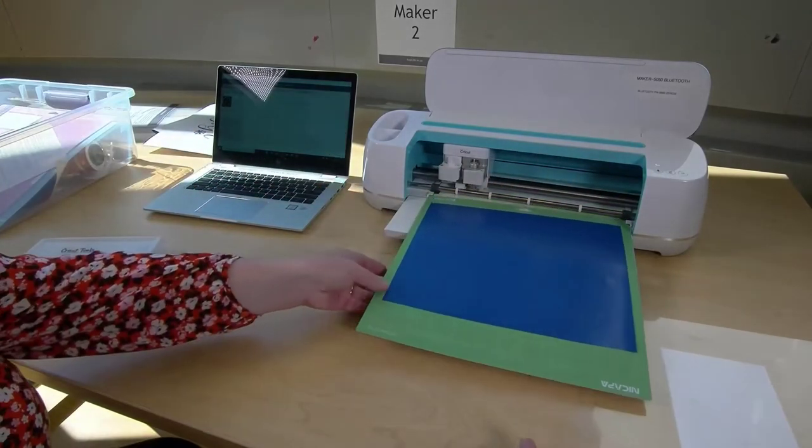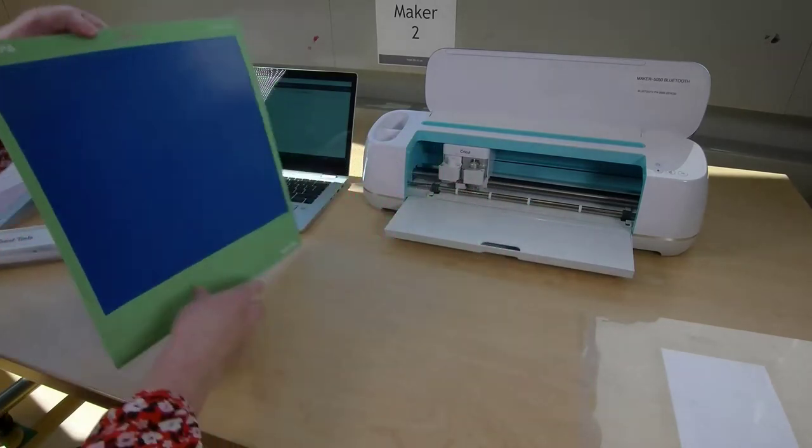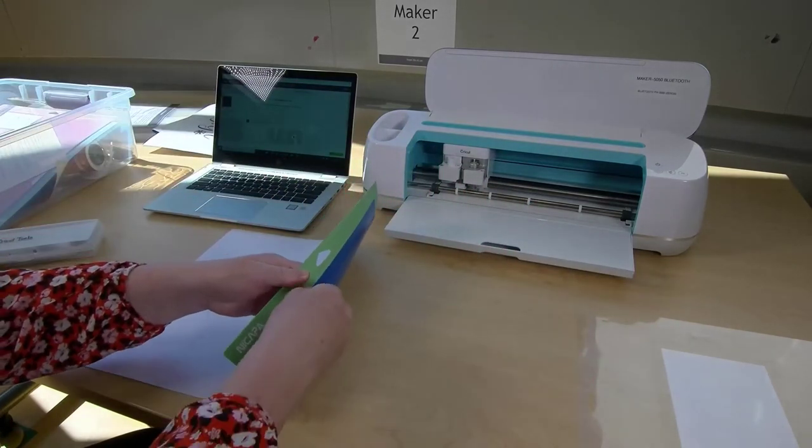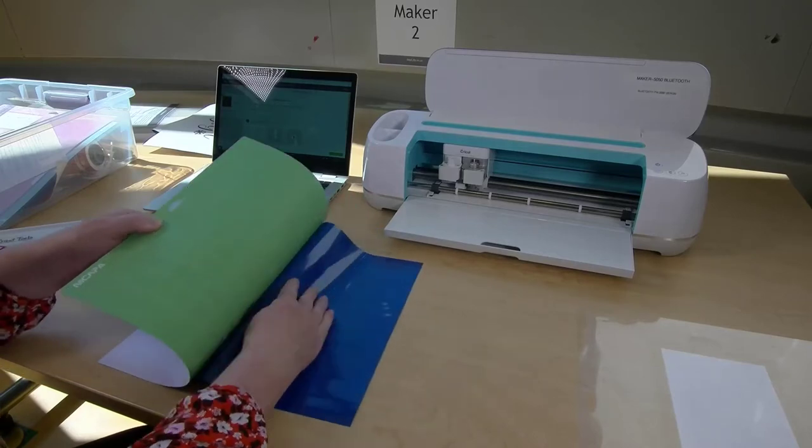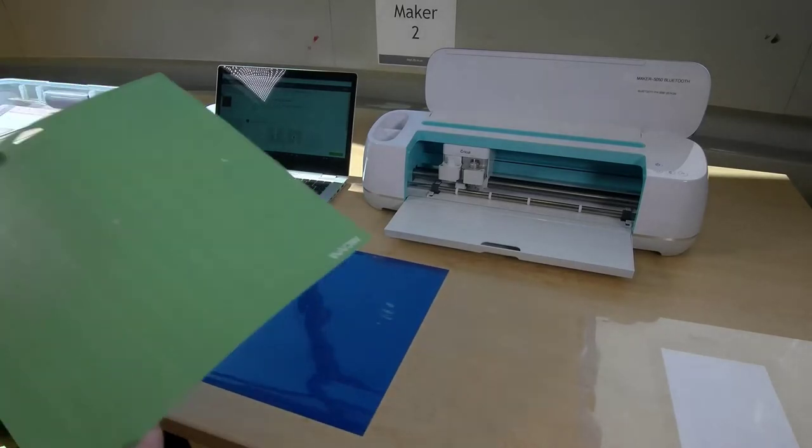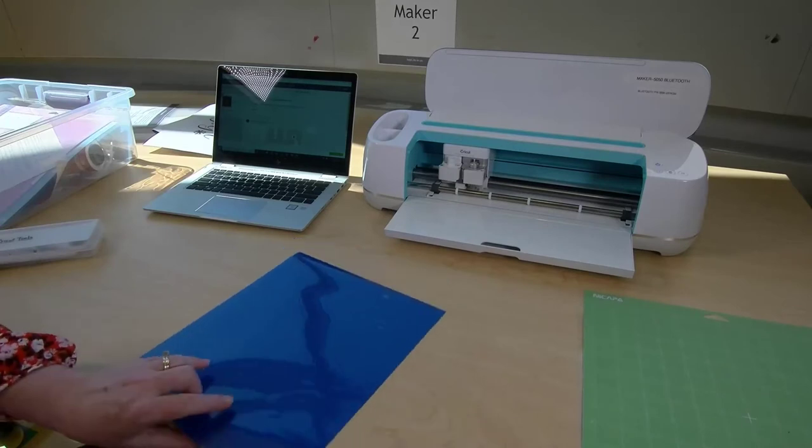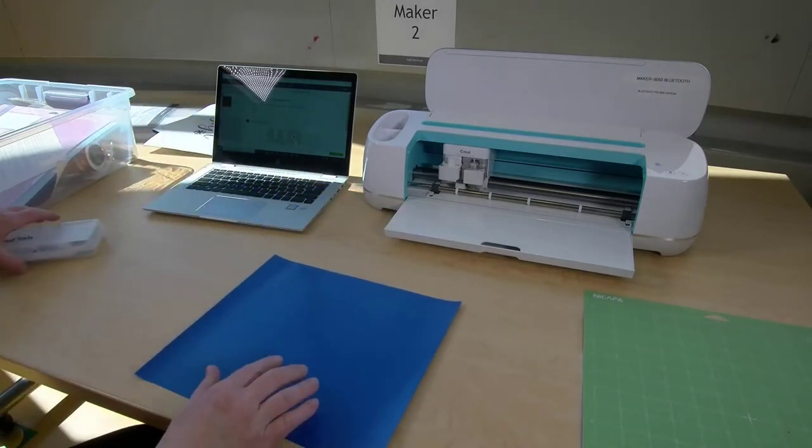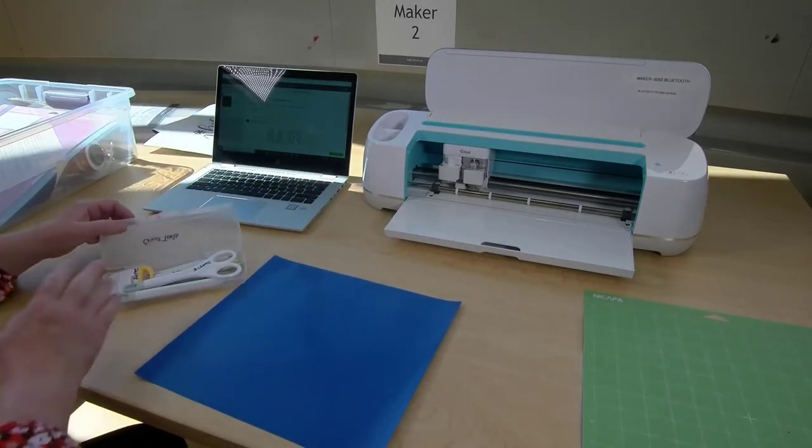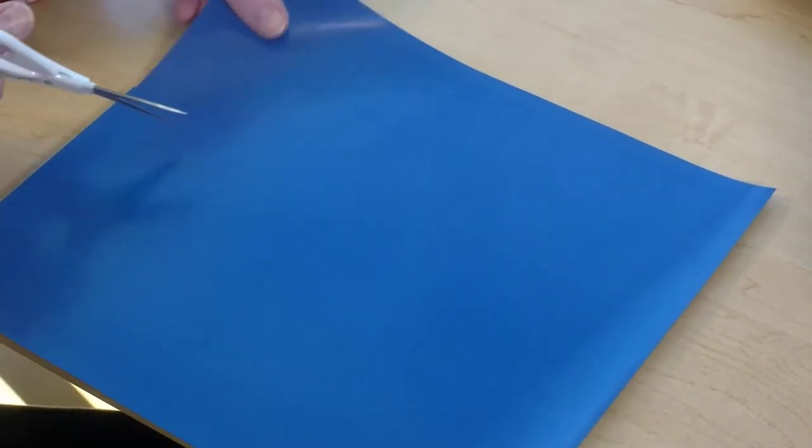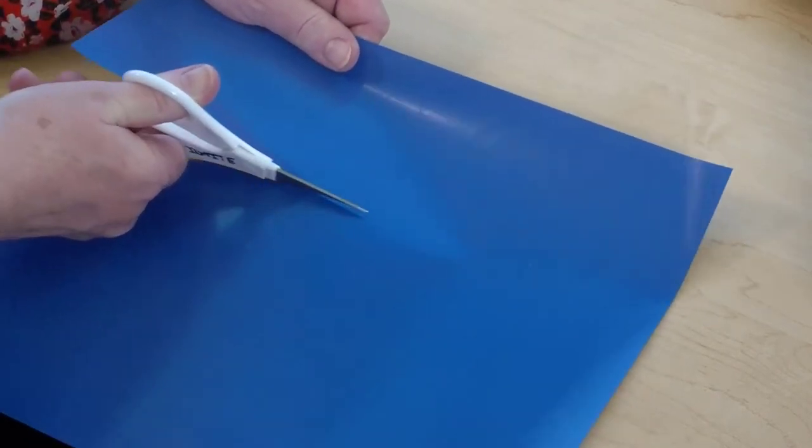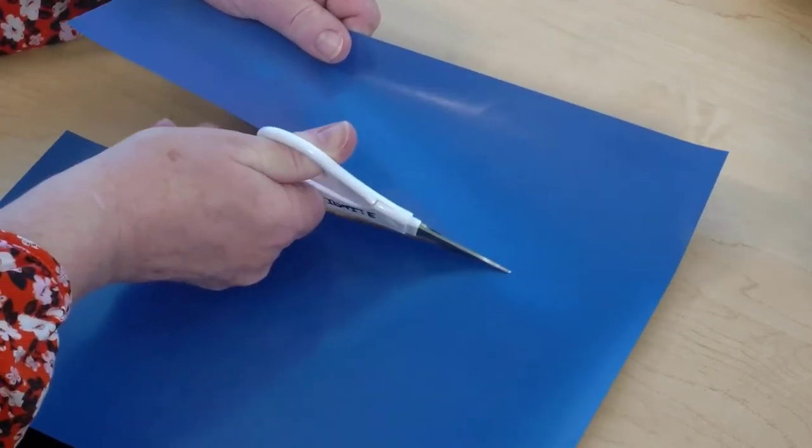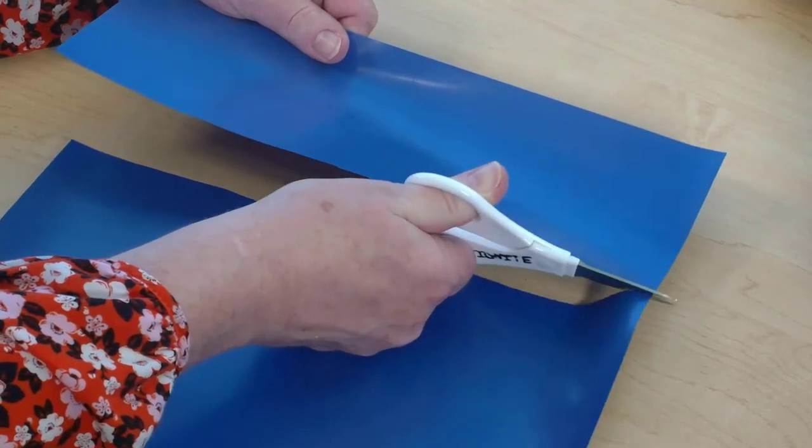Unload your mat and take the vinyl off. Lay your vinyl dull side up. This is the side you'll peel away the vinyl around your design. This is called weeding. You can use the weeding tools in the Cricut kit. Cutting close to your design makes weeding much easier and saves your vinyl for another use.